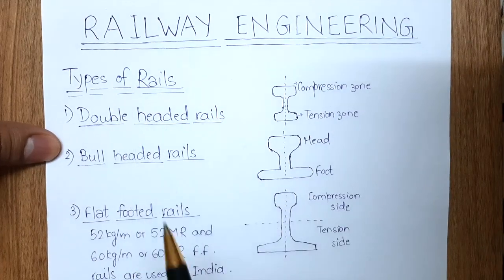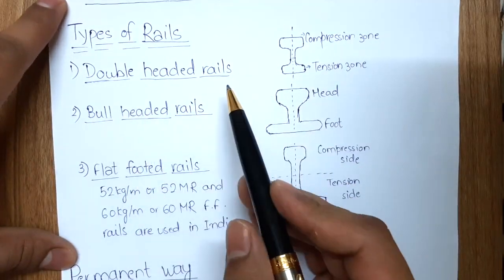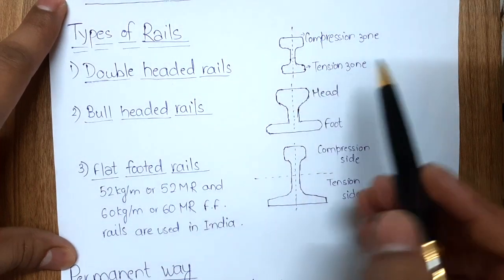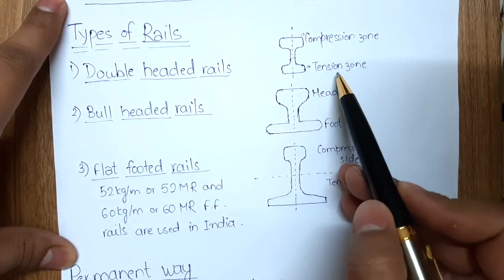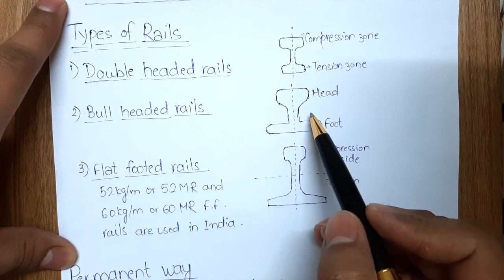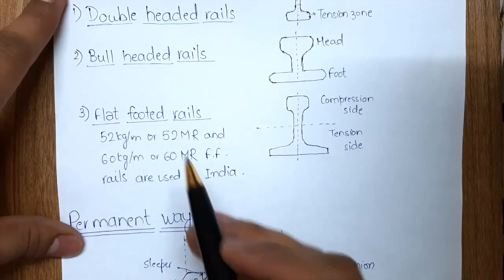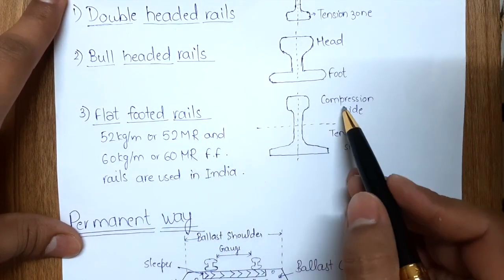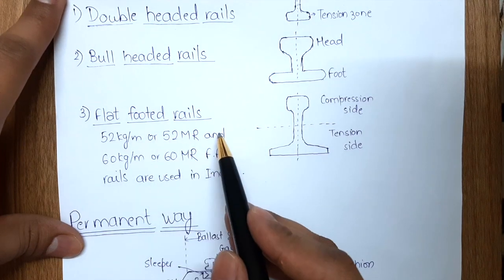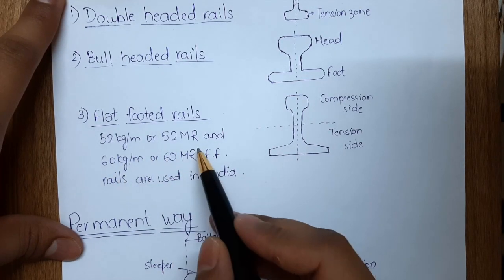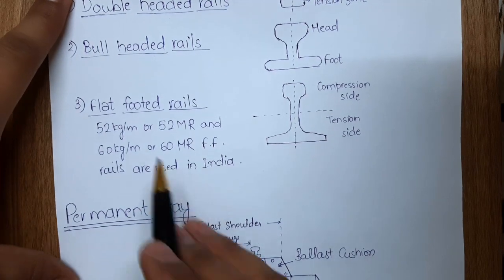Let's begin with types of rail. The types of rail used in practice are double headed rail, bull headed rail, and flat footed rail. Previously the first two were used, but now we use flat footed rail. In double headed rails, there was a compression zone and a tension zone as two heads. In bull headed rail, there was a head at top and a foot at bottom. The flat footed rail is an improvised version, used nowadays, with a headed shape compression zone and flat tension zone. Its linear density is 52 kg/m (52 MR) or 60 kg/m (60 MR). These two are being used in India.